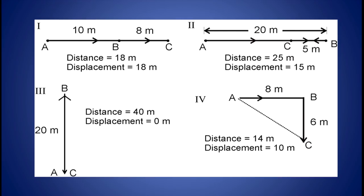For figure 4, distance equals AB plus BC which is equal to 8 plus 6, equal to 14 meters. And displacement equals AC which is equal to 10 meters. So here also distance and displacement are not same.